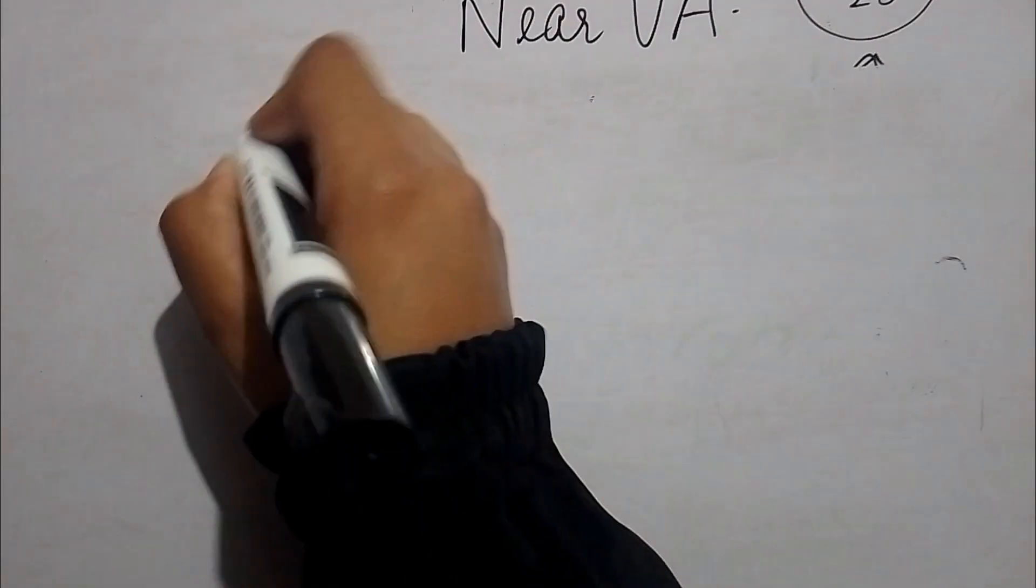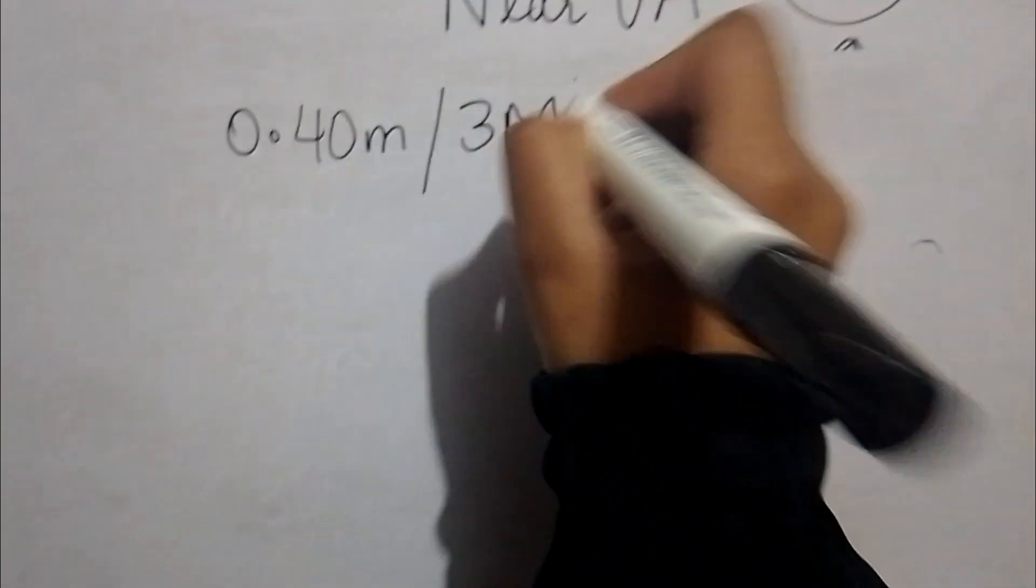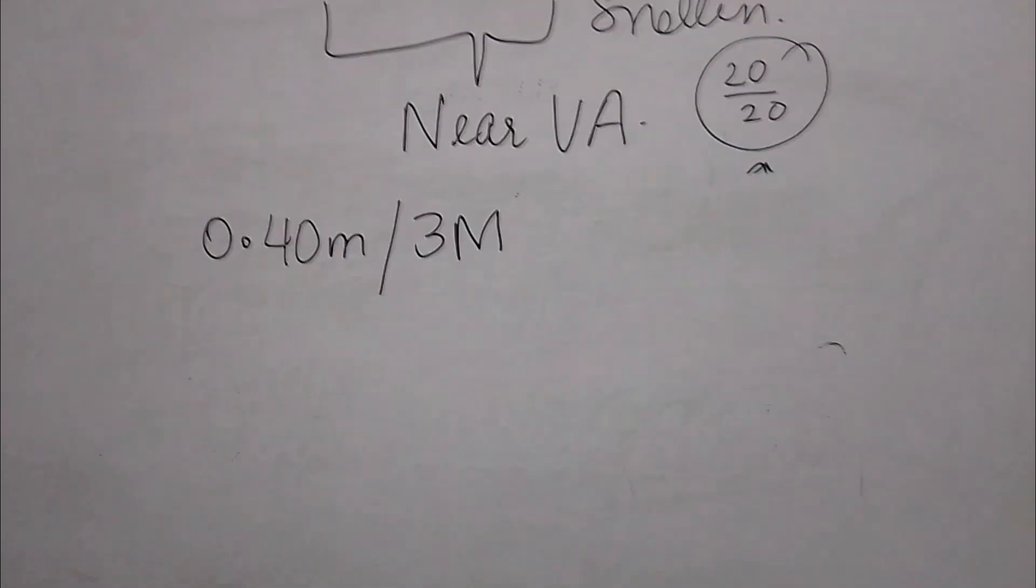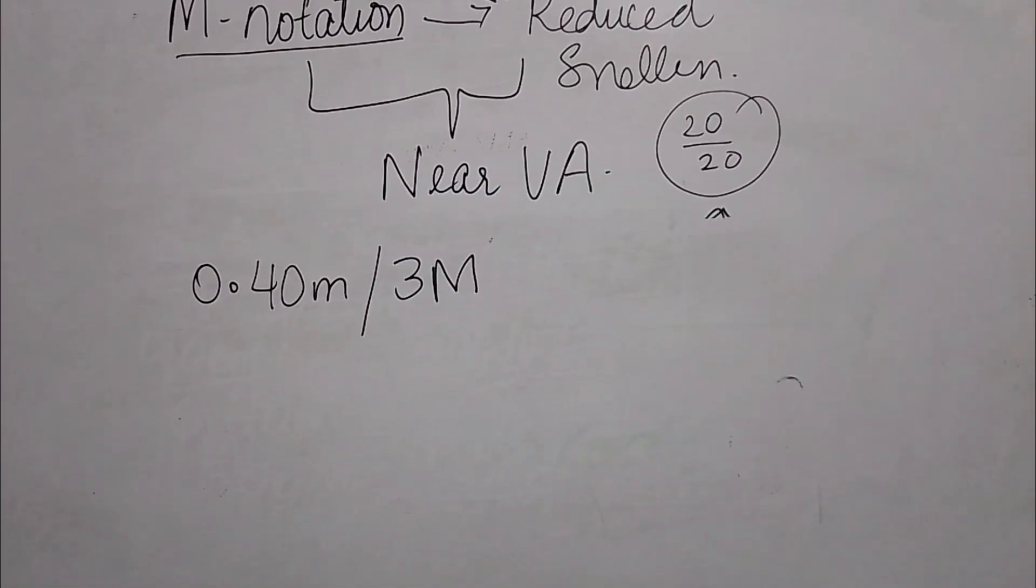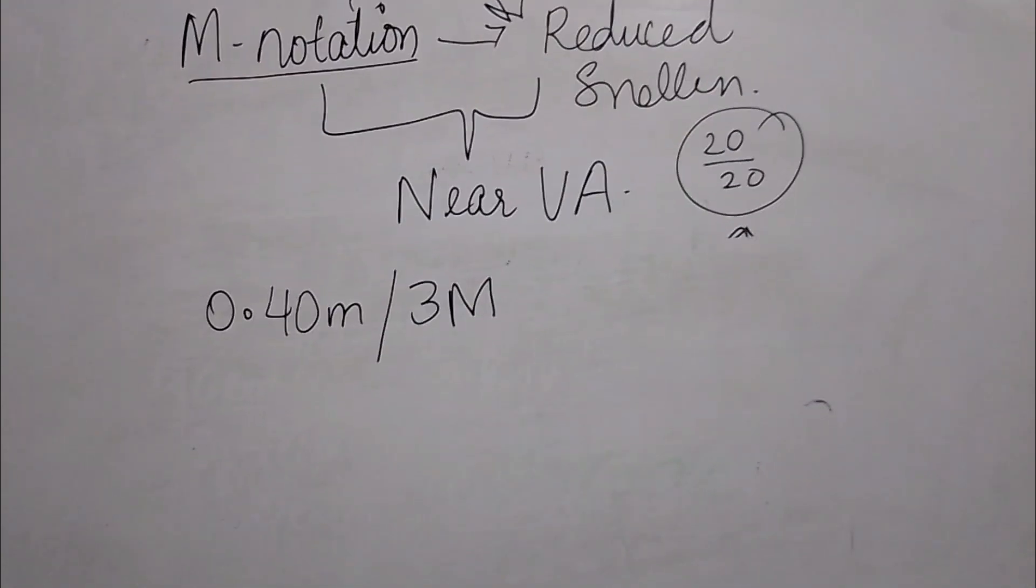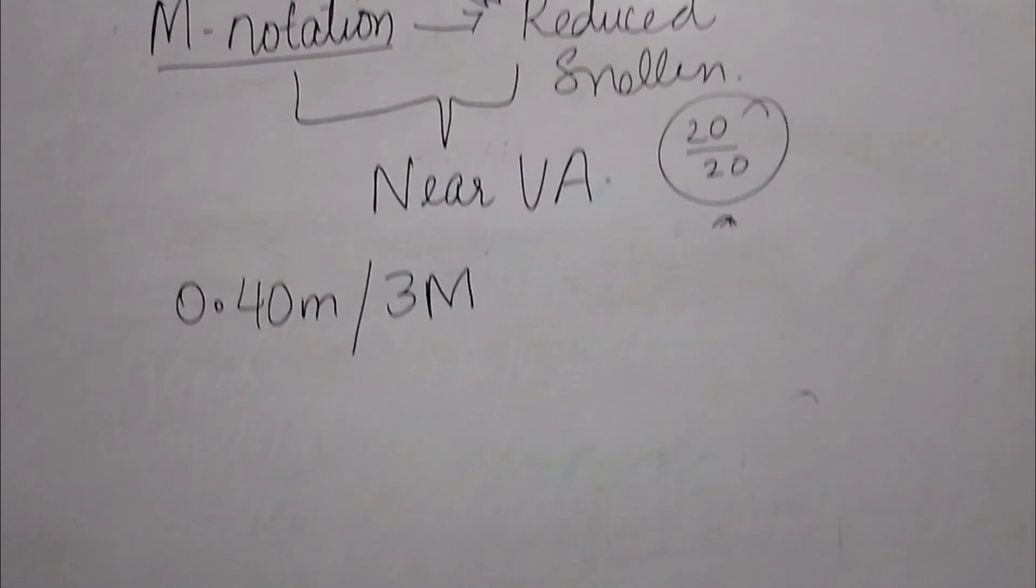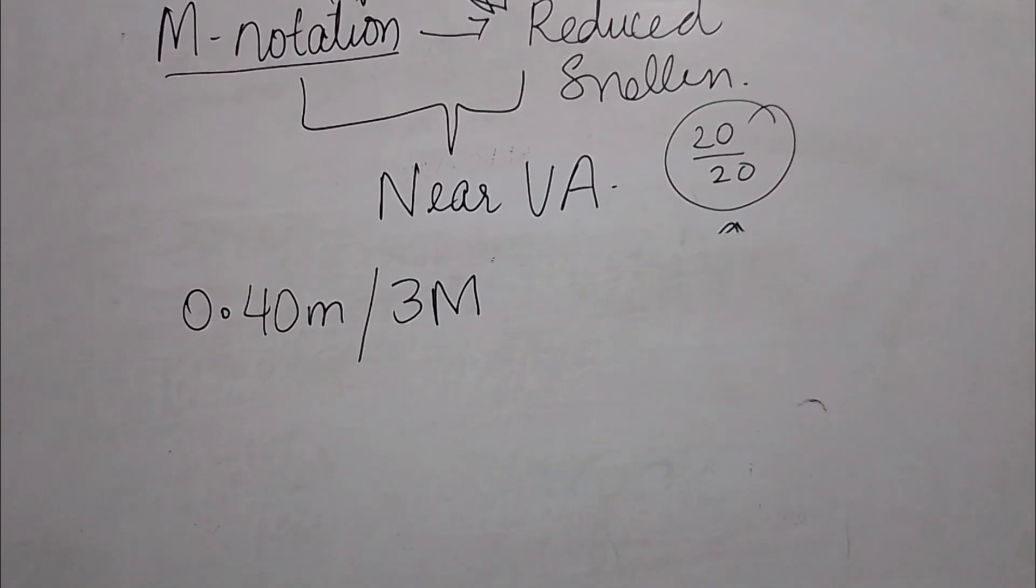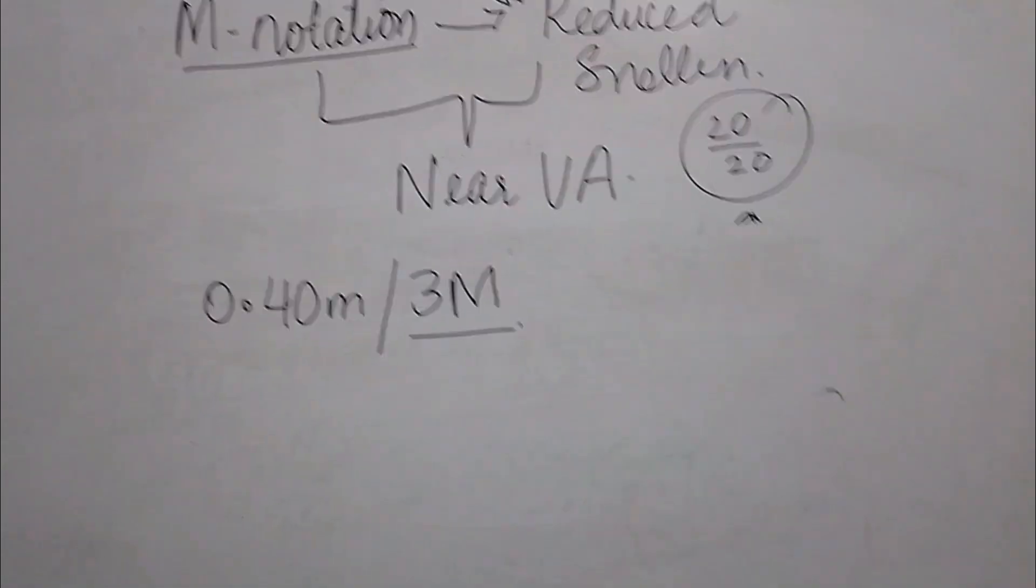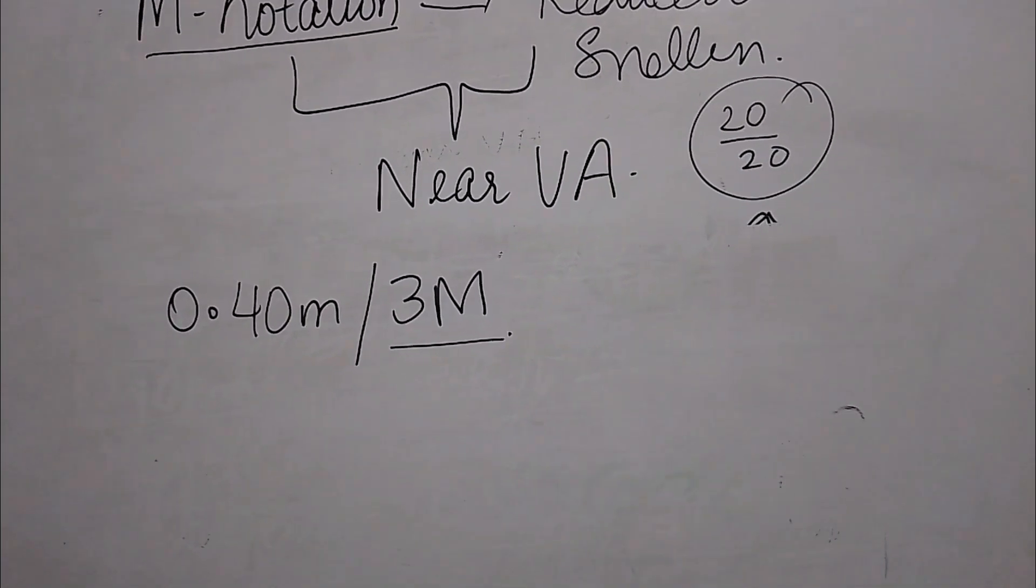As we discussed, 0.40 meters, 3M notation. M-notation chart is basically useful in patients with low vision. You have recorded a visual acuity of a low vision patient which you came to know is that at 0.4 meters or 40 centimeters, the patient is only able to read the 3M notation. I want to see how much visual acuity is in the 20 by 20 format.